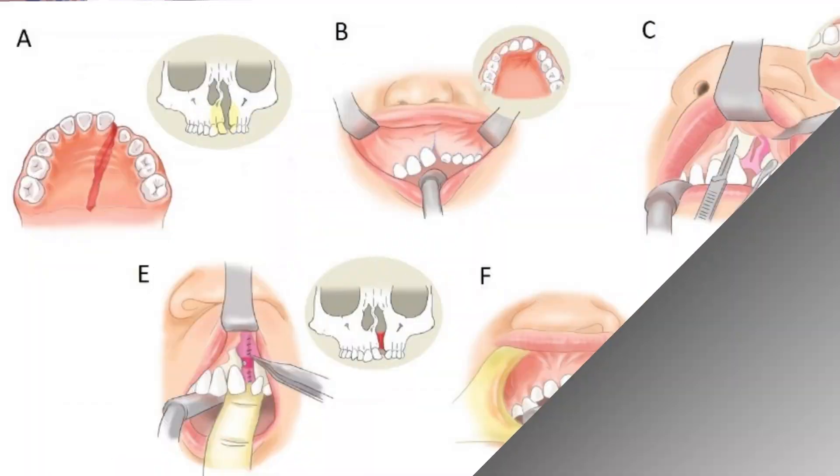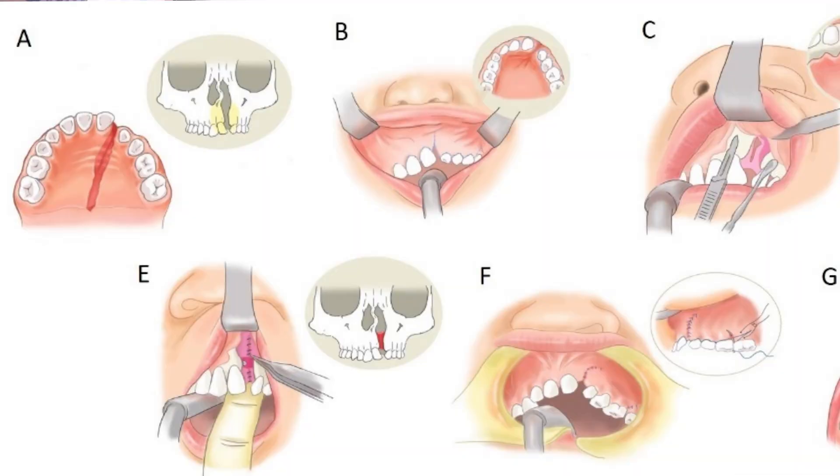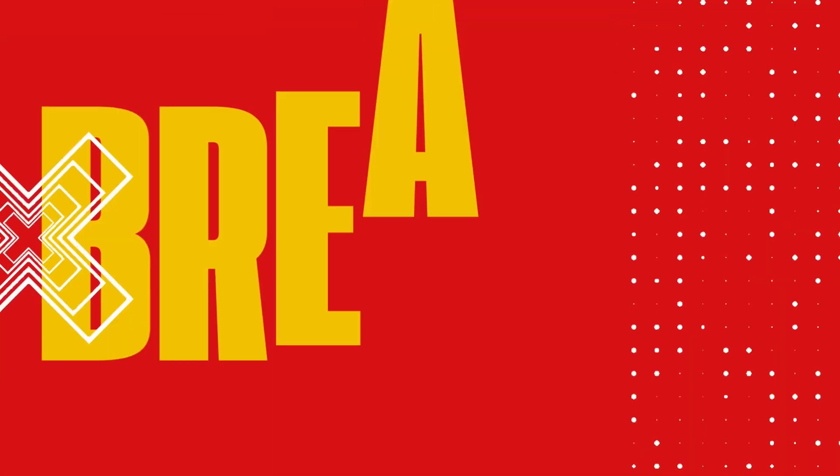Key area one is the alveolar bone graft. This is, without doubt, one of the most important procedures a child will go through in this phase. Let me break it down: it's a surgery where the surgeon takes a small amount of bone, usually from the hip (called the iliac crest), and places it in the bony gap of your child's upper gums.